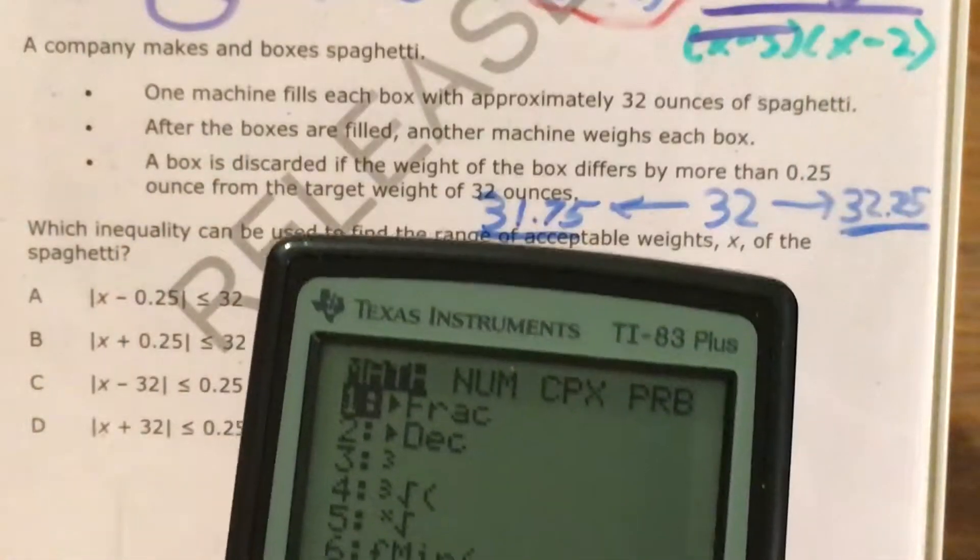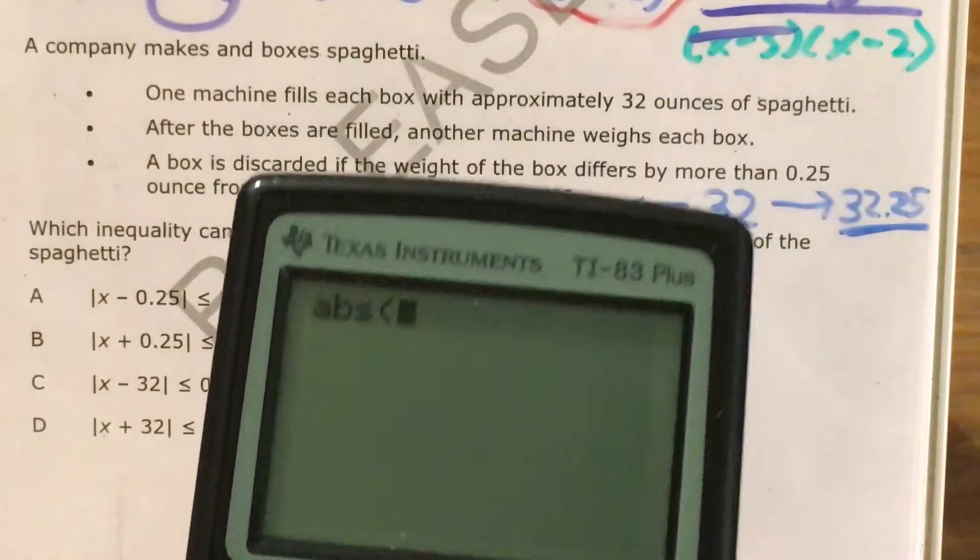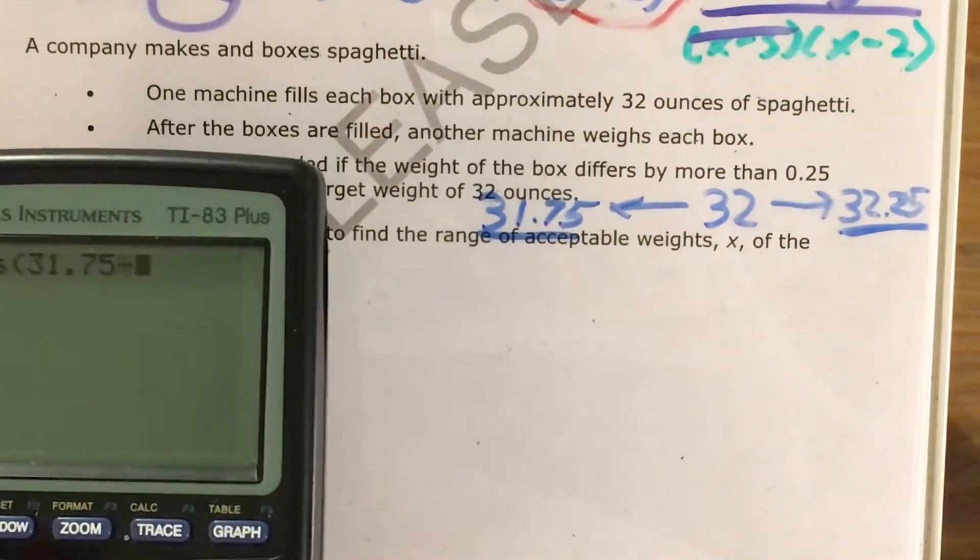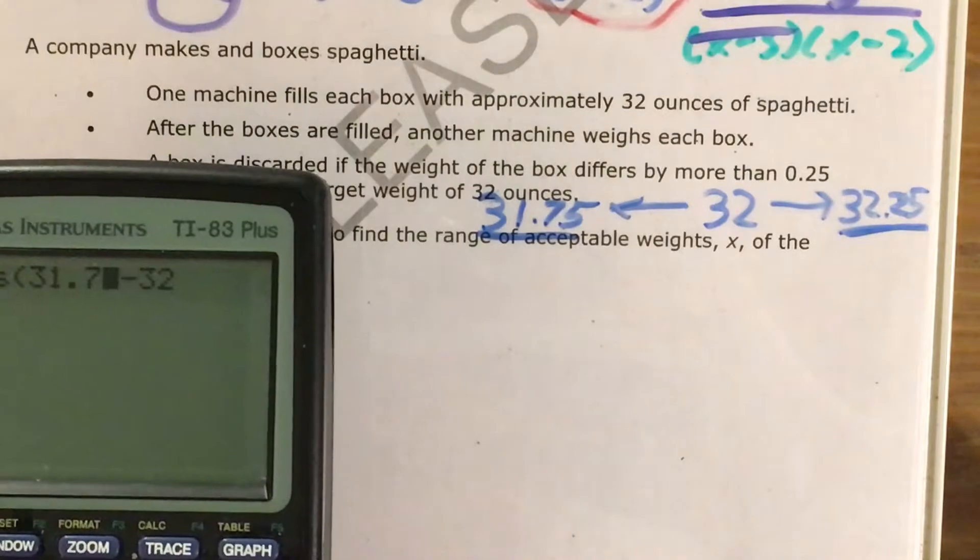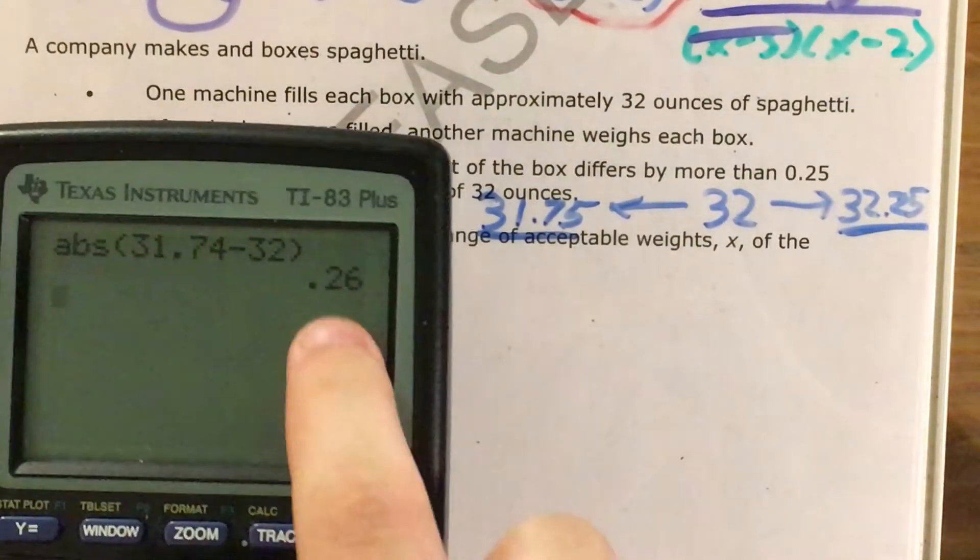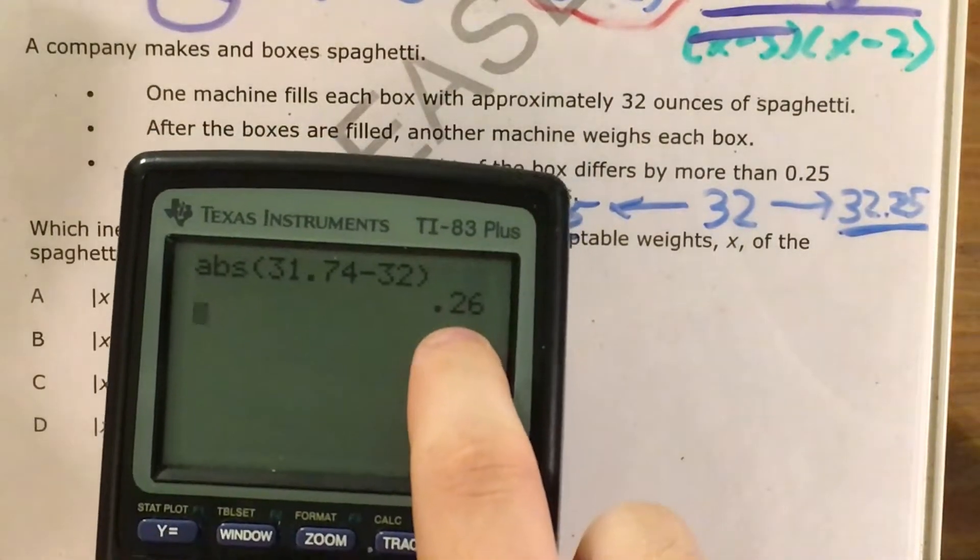I come over to number. This is absolute value. So if I do absolute value and then do 31.75 minus 32, or actually I'm testing something just outside the range, minus 32, it gives me my answer, which is 0.26.